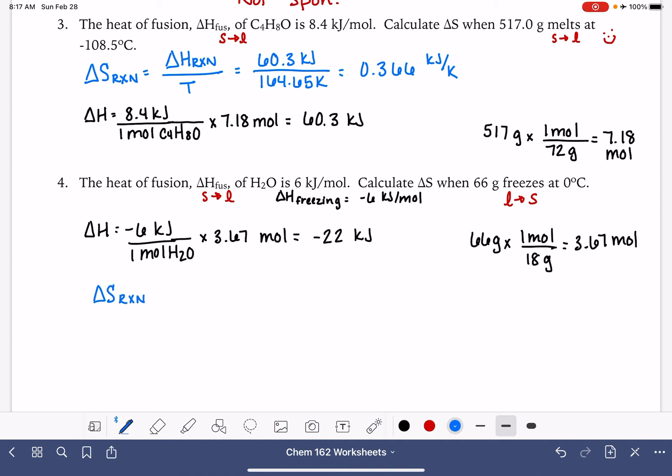Delta S of the reaction is going to be the delta H of the reaction divided by the temperature. The delta H of this reaction is negative 22 kilojoules. The temperature is 0 Celsius, which is 273.15 Kelvin. And this gives us a delta S of negative 0.0805 kilojoules per Kelvin.